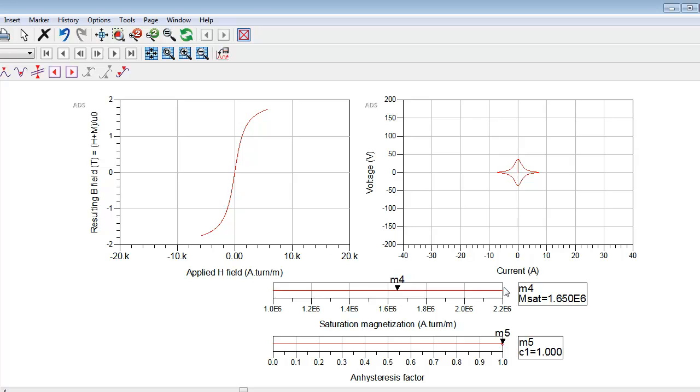If I reduce the saturation magnetization of my material I'll see this characteristic S-shaped curve. Likewise, if I reduce the hysteresis factor you start to see the hysteresis come in, and this is very characteristic of ferromagnetic materials.